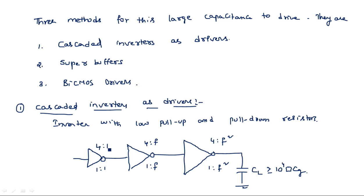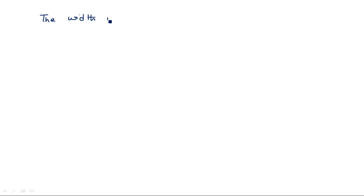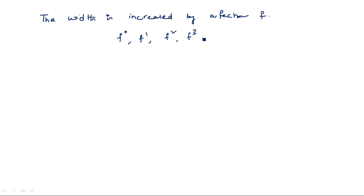We take n number of inverters in cascade, where each inverter's width factor is improved by a factor f. The widths follow the progression f^0, f^1, f^2, f^3, and so on. For n number of inverters in cascade, the width factor is f^n.